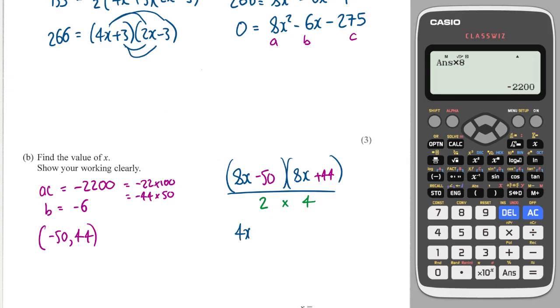So, this is going to give me 4x minus 25, and this is going to give me 2x plus 11, and this is equal to 0.